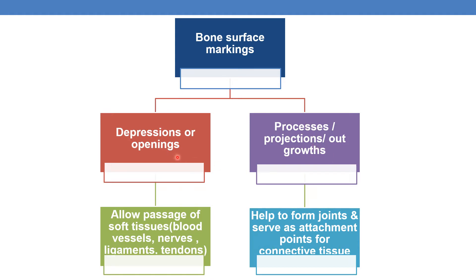Depressions or openings allow passage of soft tissues — for example, blood vessels, nerves, ligaments, and tendons. Their major function is to allow the passage of these soft tissues through bone.